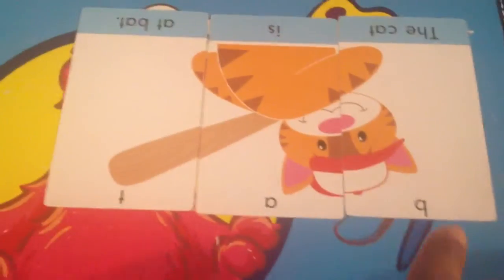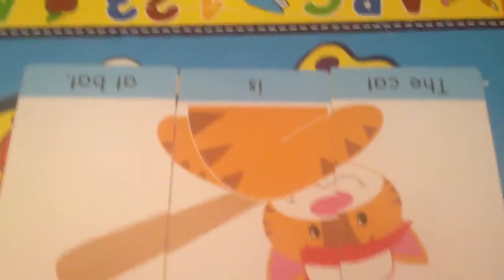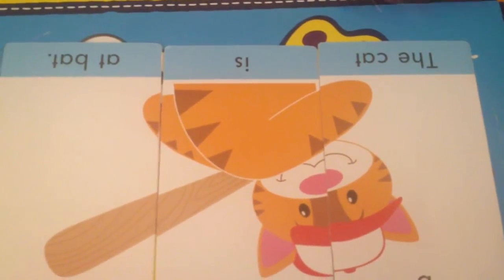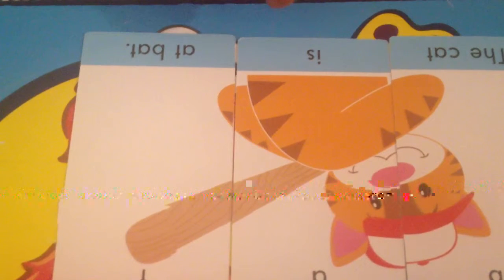What word is this, Aniyah? Bat. Bat. Let's read our sentence. The cat is at bat. That's right, the cat is at bat. Good job.